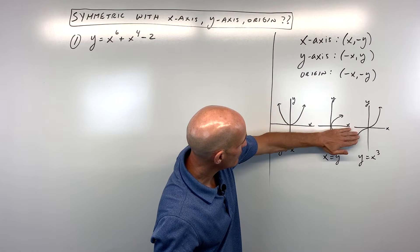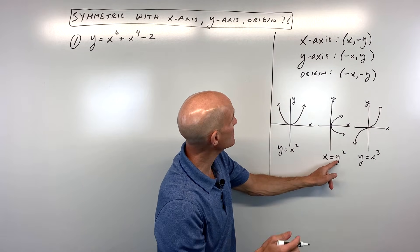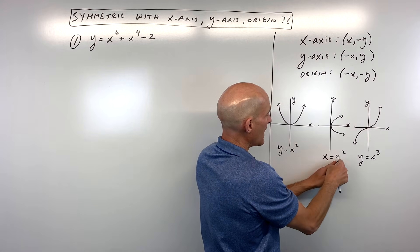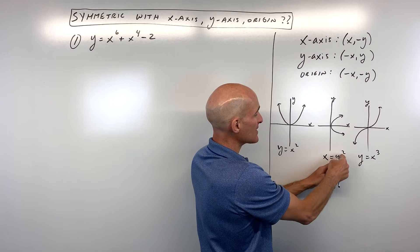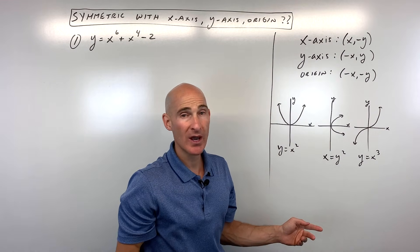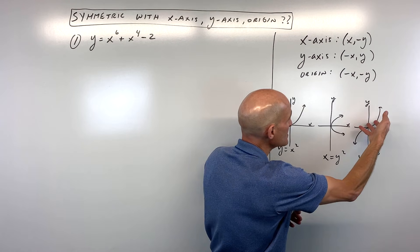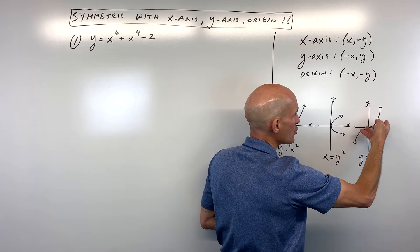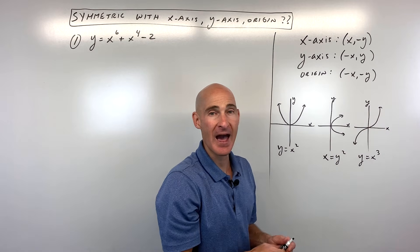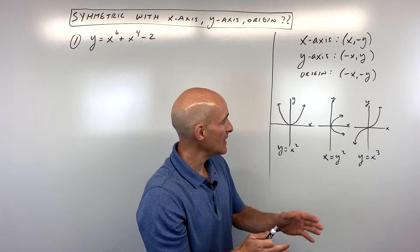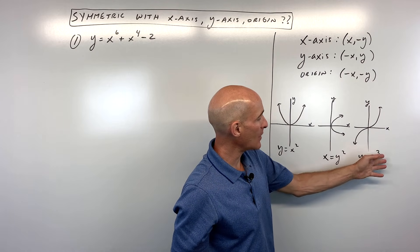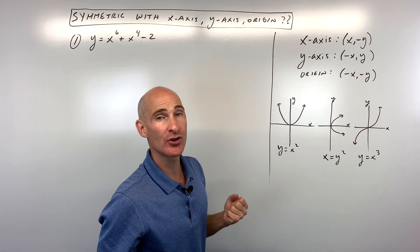x equals y squared is a reflection over the x-axis. If you replace y with negative y and square it, that gives you a positive y squared, and x stays x — you get back to the original equation. And y equals x cubed is a 180-degree rotation about the origin. If you replace x with negative x and y with negative y and simplify, you'll get back to the original equation.